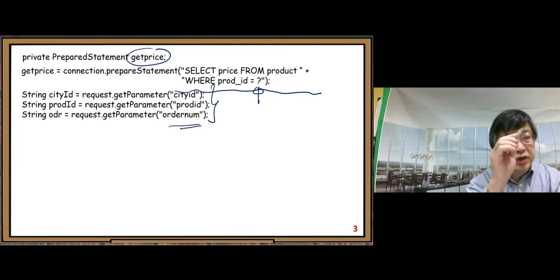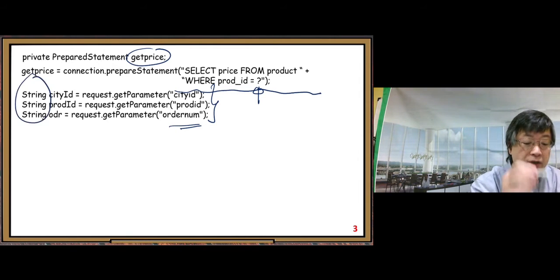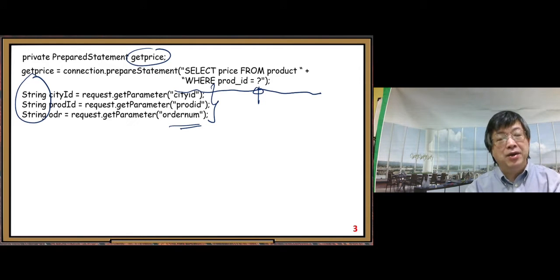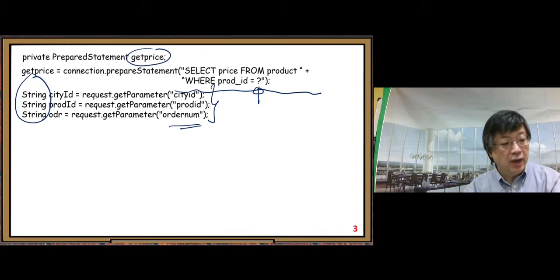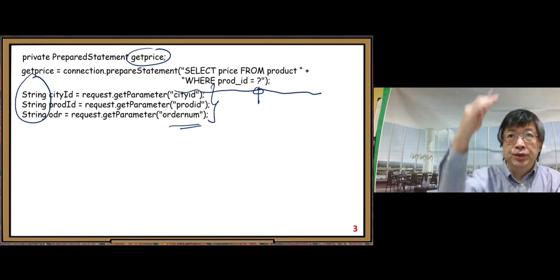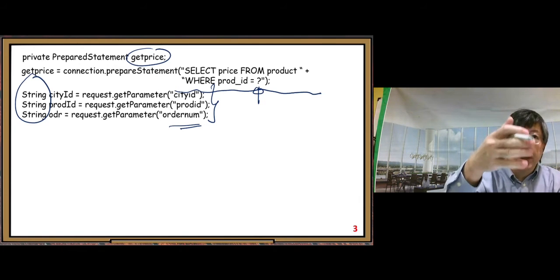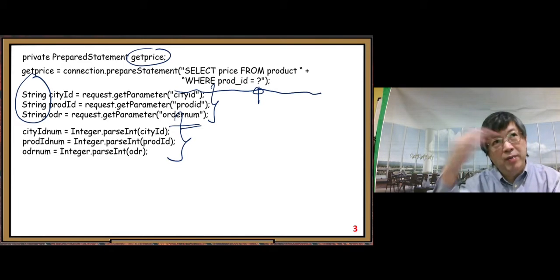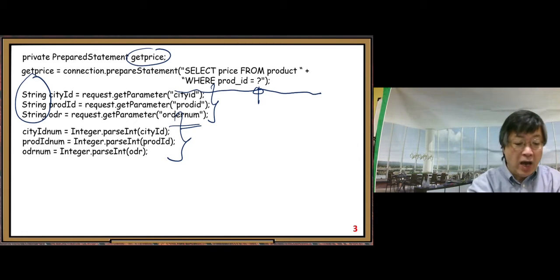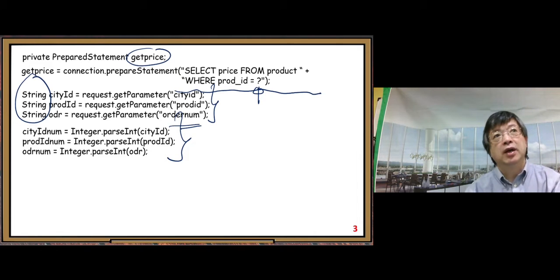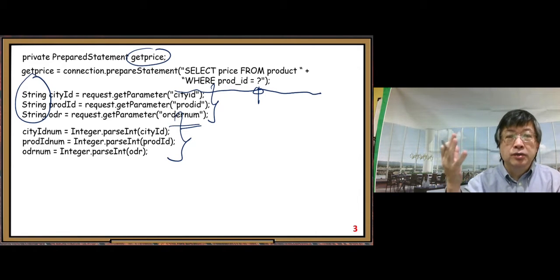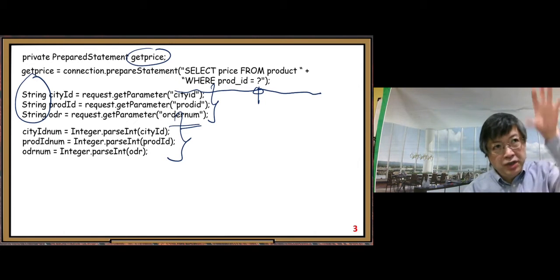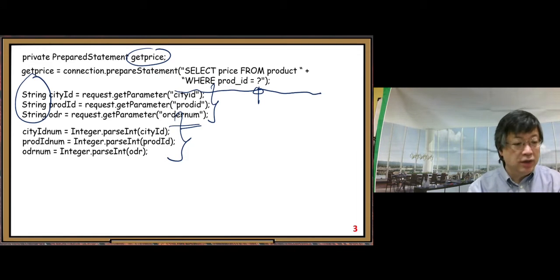We retrieve three user input numbers. Originally they are in string format, so we need to convert them to numbers in order to do any calculation. We use a try block for that — in my code sample you can see the complete structure easily.